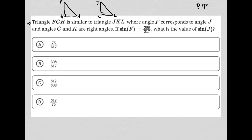We're also told that the sine of F is 308 over 317. That means that this side here would be 308, and that the hypotenuse here would be 317. I know that because here's where angle F is, and based upon the SOH portion of SOH-CAH-TOA, the sine of an angle is equal to the opposite side over the hypotenuse. So that's how I know where 308 and 317 go.